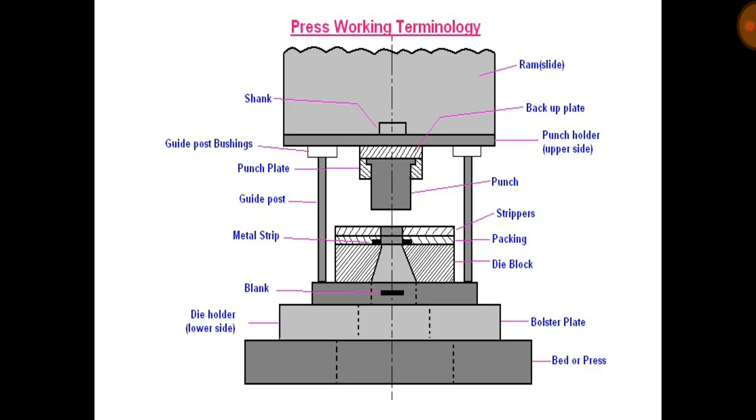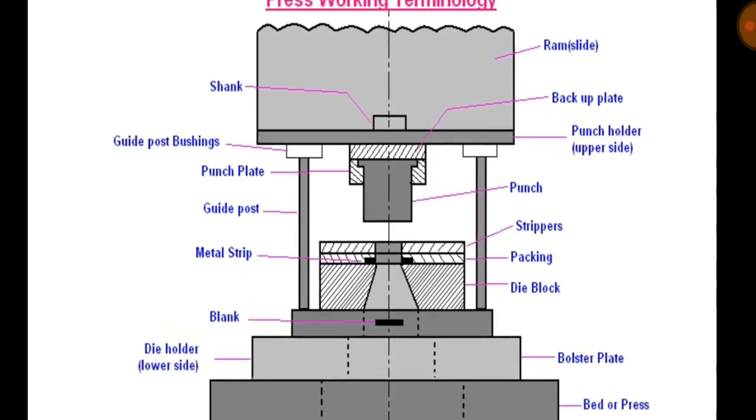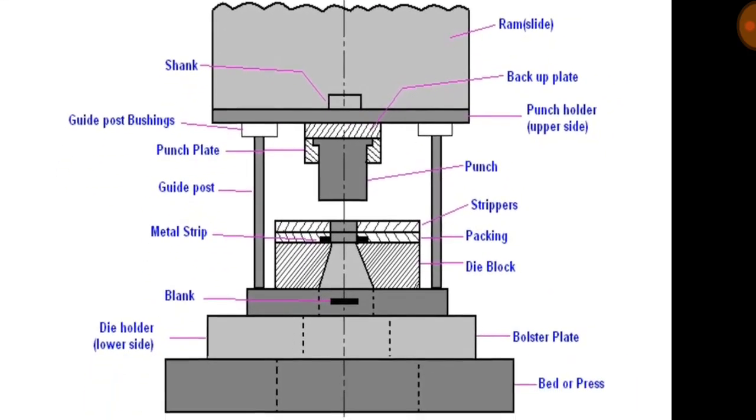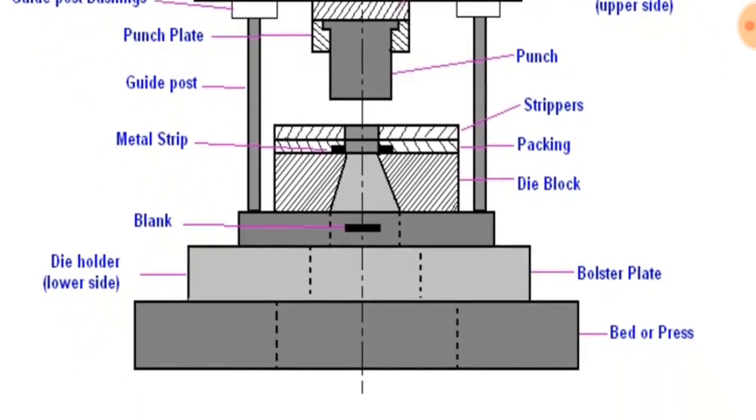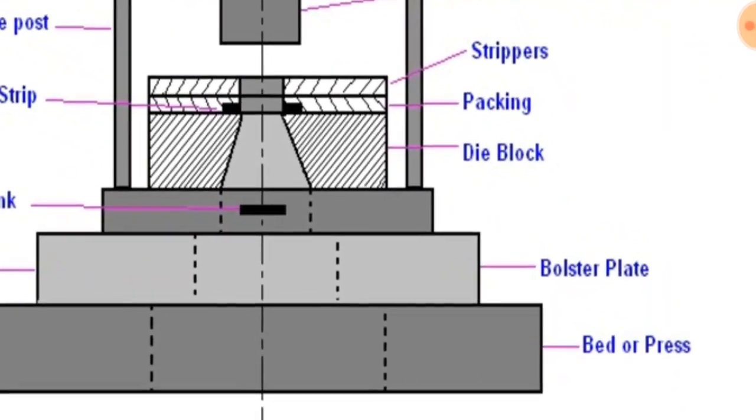So in this diagram we will see so many parts. First we are going to discuss about the bed. The bed is the lower part of a press frame that serves as a table in which a bolster plate is mounted.